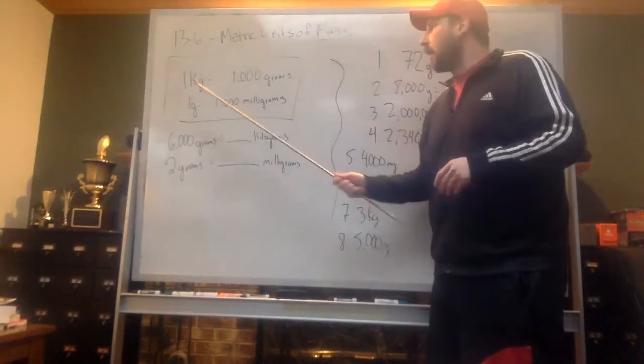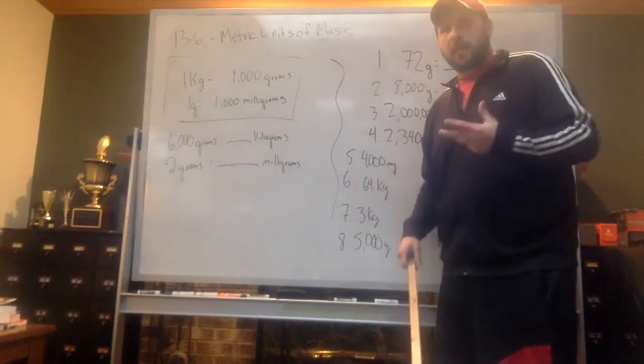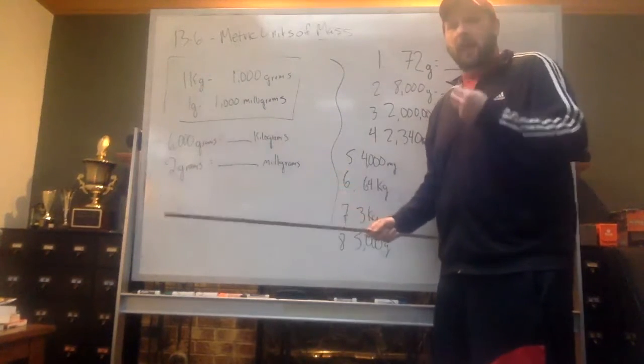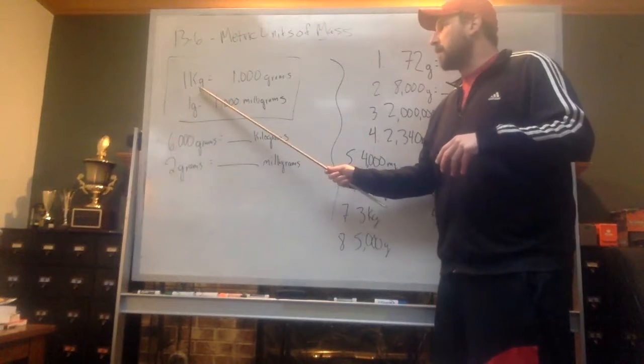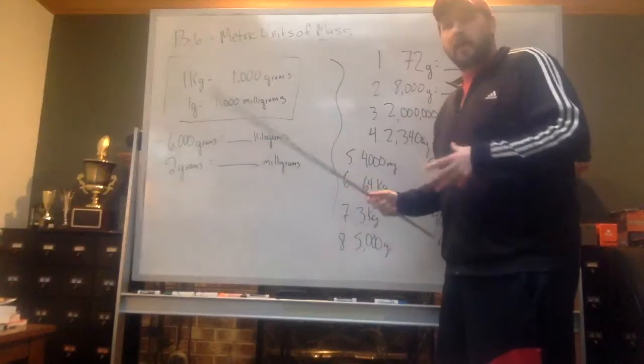The key things that we have to know are kilograms, grams, and milligrams. You're going to notice a lot of the same prefixes that we've heard before. Kilo is a thousand of that unit, so kilograms is a thousand grams. And one gram is one thousand milligrams.